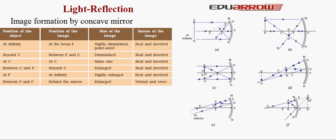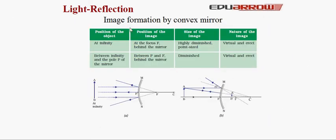Let us now understand image formation by convex mirror. When the object is placed at infinity, the image is formed at focus. The size of the image is highly diminished — point size. The reflected ray appears to meet, and the nature of the image is virtual and erect. When the object is placed anywhere between infinity and the pole of the mirror, the image is always formed between focus and pole. The size of the image is always diminished, and the nature of the image is virtual and erect.